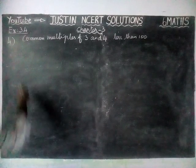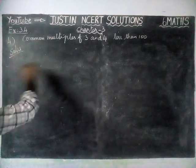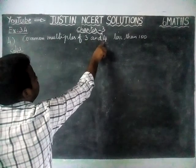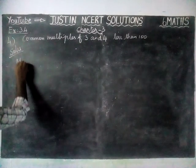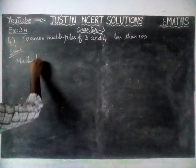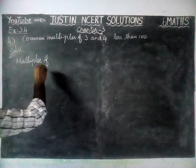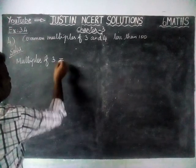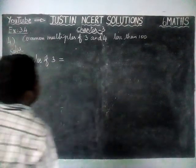We have to find multiples first, up to 100. We have to find multiples of 3 and multiples of 4. First, we are going to find multiples of 3. We are going to write the 3 times table up to 100.